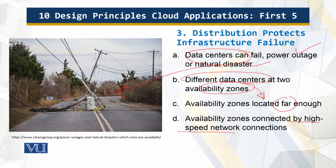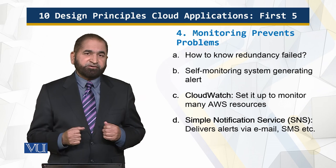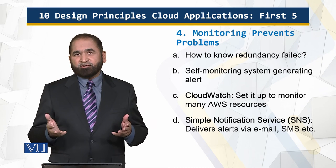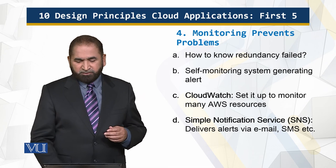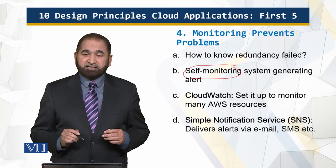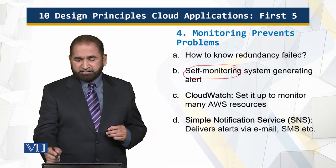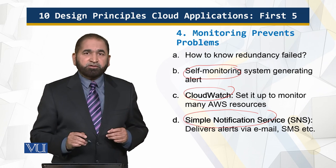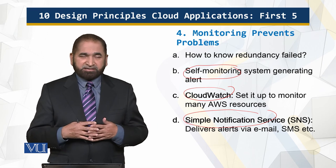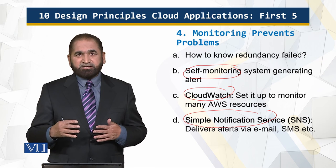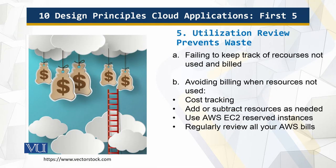The fourth principle: monitoring prevents problems. To know when redundancy fails, monitoring cannot be done by humans — it is expensive, humans get bored, and they need breaks — so it has to be automated. These self-monitoring systems generate alerts that go to the administrator, and they can also take automated actions. It is an unfortunate fact that many Amazon Web Services users fail to keep track of the resources they use, which can lead to underused or even unused resources that are still being billed.